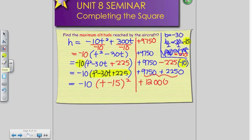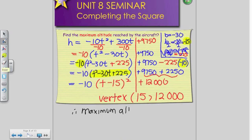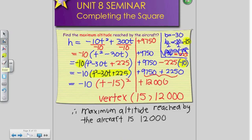So I know that my vertex, when x is equal to 15 seconds, y is equal to 12,000 meters. So the maximum altitude, whenever you have a word problem, you have to always write a written statement. The maximum altitude reached by the aircraft is 12,000 meters.